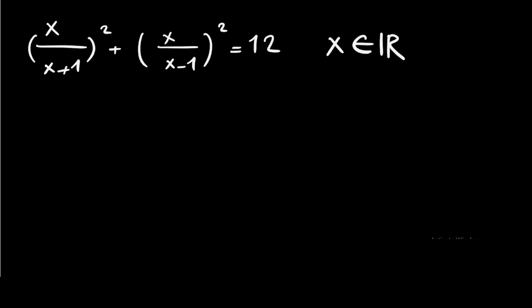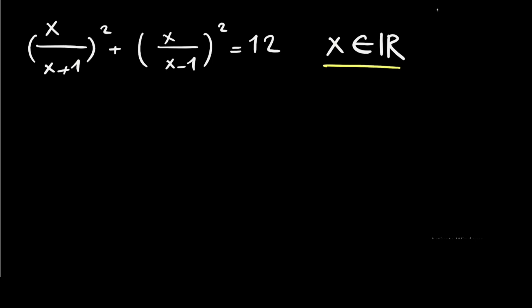Welcome to my speed math today. We're going to solve a really nice math olympiad problem from the Japanese Math Olympiad. We have x over (x+1) squared plus x over (x-1) squared that's equal to 12, and we know that x is a real number. We want to find x in this equation.